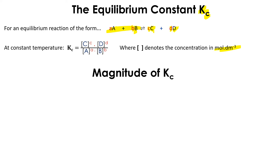We would like to speak about the magnitude of Kc. In this reaction, R is making P — reactants are reacting to make products. The small letters again represent the number of moles of the reactants and number of moles of the products. Kc is the concentration of P to the power of p, over the concentration of R to the power of r.